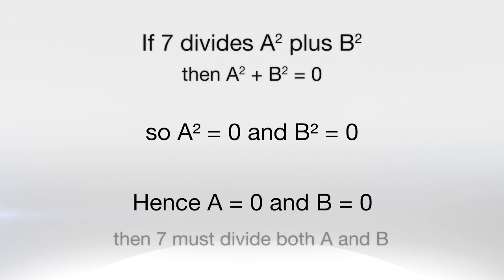Well what does it mean if A equals 0 and B equals 0? We're nearly finished. Well it means that the remainder of A when we divide by 7 equals 0. And this means that 7 must divide A. And of course we can have the same result with B.